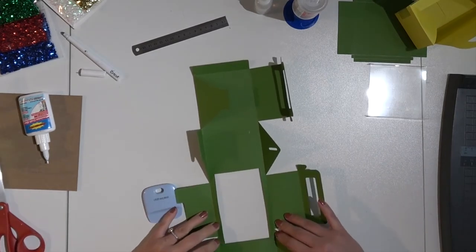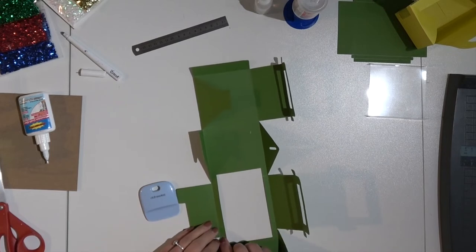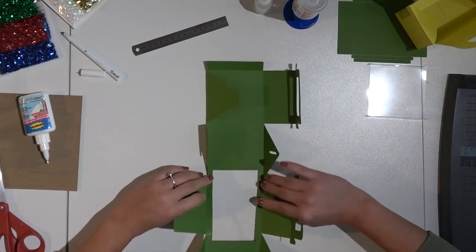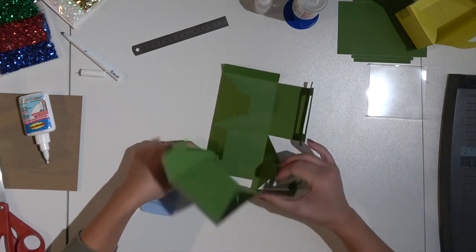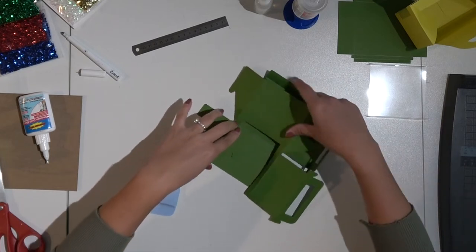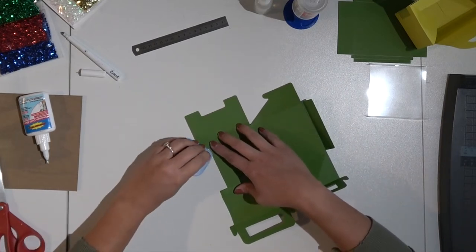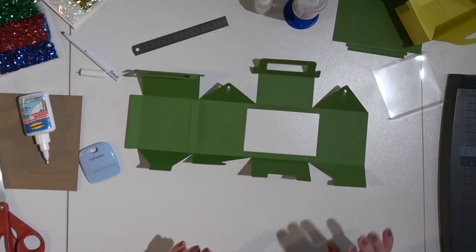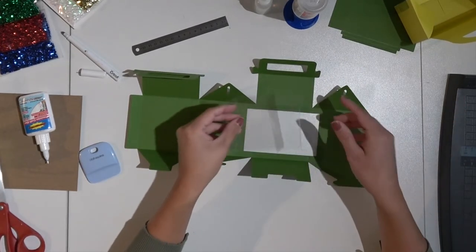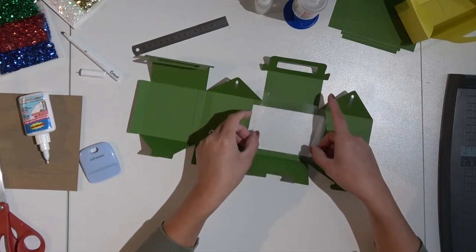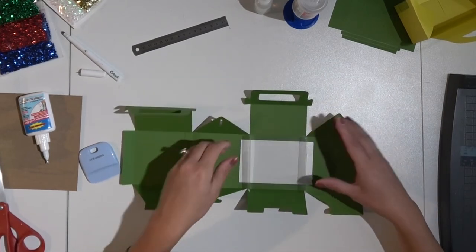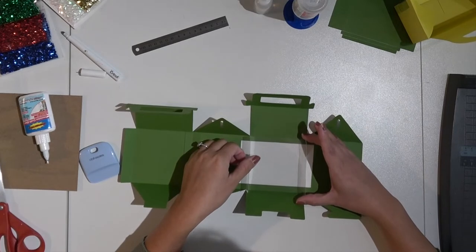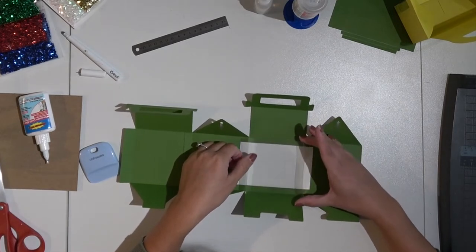Then we have another score here and here so we're going to fold this in and also stamp it down so we get nice crisp lines. There we go nice and crisp. Taking our clear transparency making sure that it fits in there. It should as long as we did the design process right. It should fit just fine.